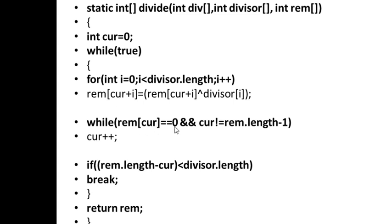After each XOR pass, the code checks if remainder[current] equals 0. If it is 0, the current pointer increments. The loop breaks when current is not equal to remainder.length minus 1, meaning when current reaches index 10 (the last meaningful position). Then the function returns the remainder.